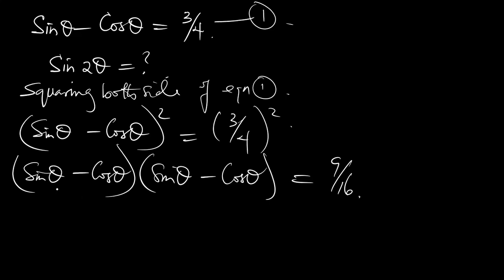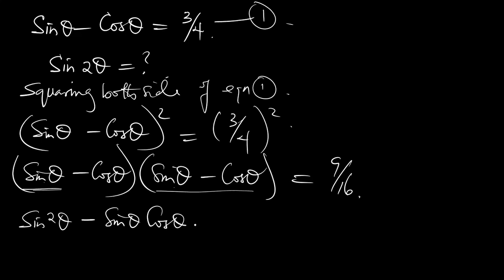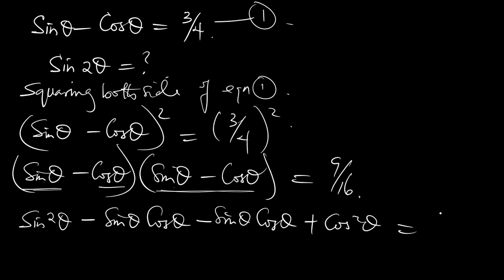Now I open up this bracket. Using sine theta to multiply, sine times sine gives sine squared theta. Then sine times minus cos theta gives minus sine theta cos theta. Then minus cos theta times sine theta gives another minus sine theta cos theta, and minus cos theta times minus cos theta gives plus cos squared theta, all equal to 9 over 16.